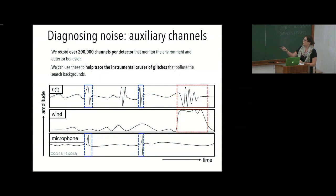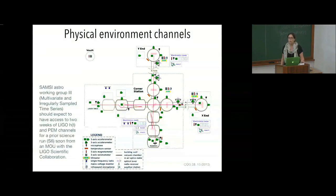And this just gives you a sense of some of the comparisons we might do. So this is an example gravitational wave strain channel that has four transients in it and three of them match up, two with this microphone channel and then another with an anemometer measuring wind.